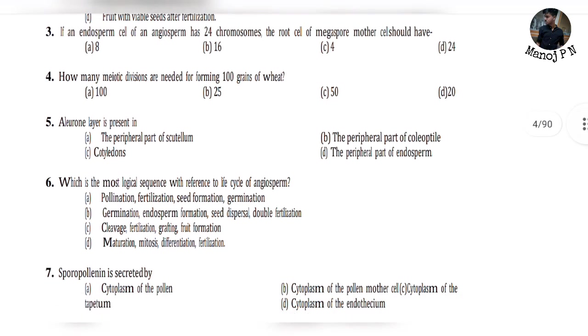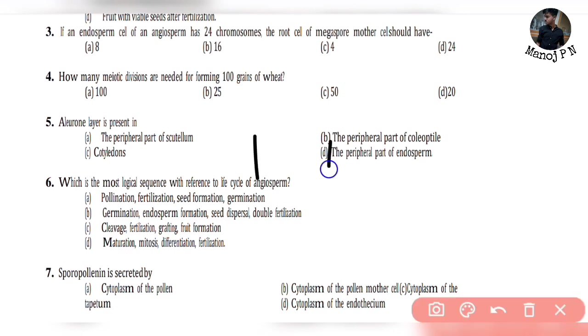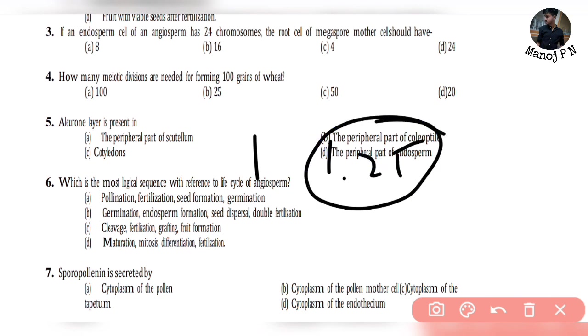Question 4: How many meiotic divisions are needed for forming 100 grains of wheat? If you want to form one grain of wheat, only 1.25 meiotic divisions — the meiotic division calculation applies.